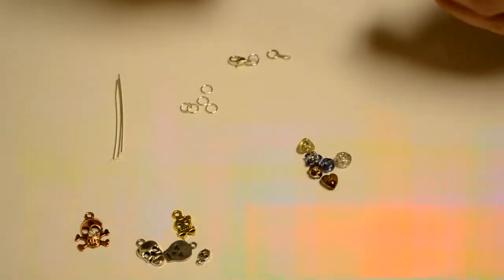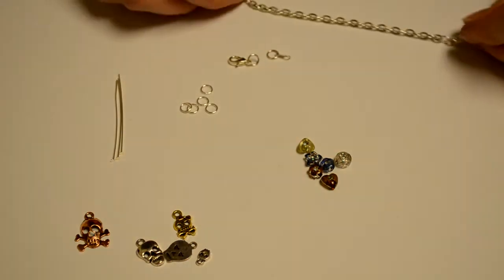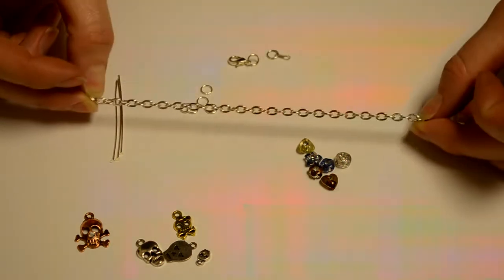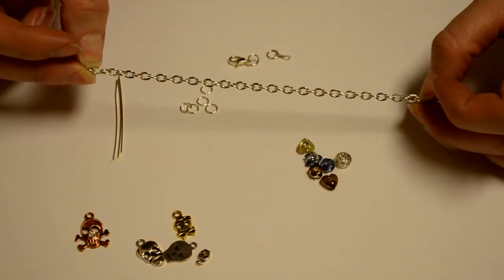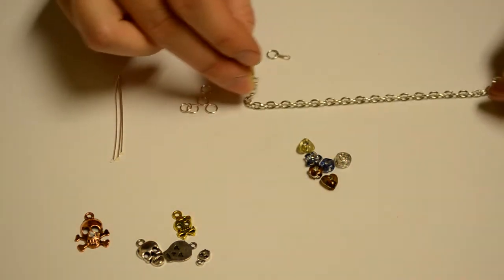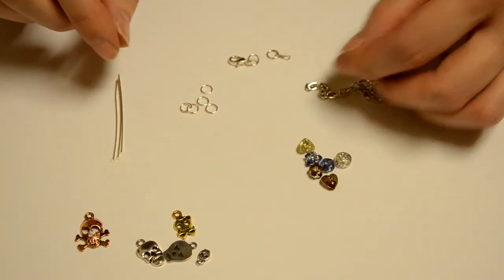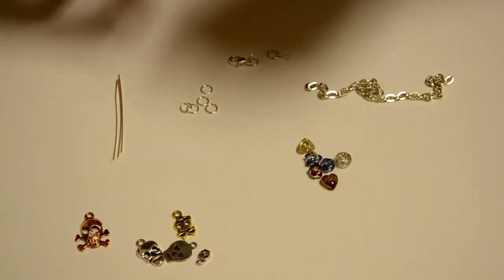We're going to need a length of chain. I measured this to go around my wrist and I wanted an odd number, so I chose 45 links. You can either snip this chain or treat it like a jump ring.